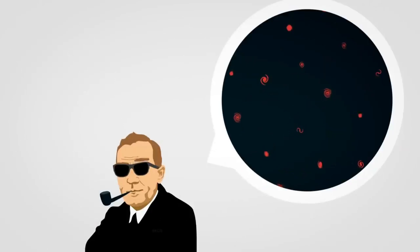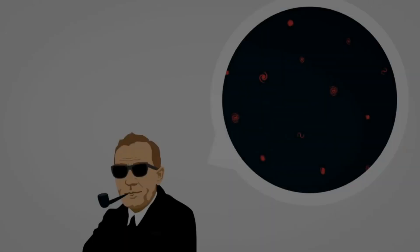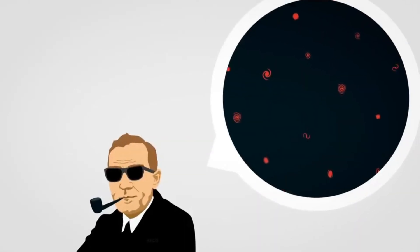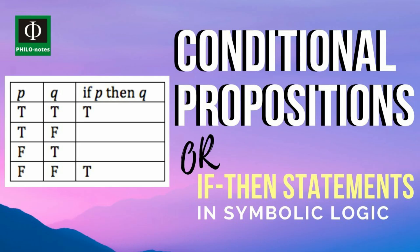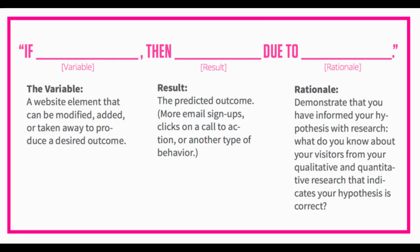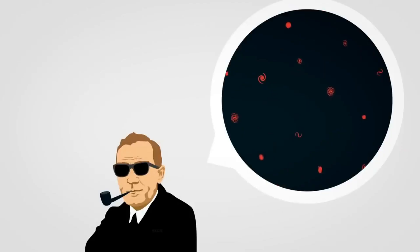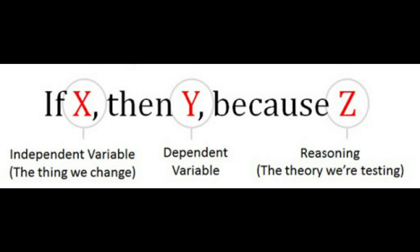Edwin Hubble discovered that galaxies are moving apart from one another in a way that fits previous predictions. This is the first if-then-because — a conditional proposition or hypothesis. Hubble discovered that galaxies were moving apart from each other. This man was on Earth with a telescope at best, and this is based on lights in the sky, not direct observations. There are a lot of assumptions going on here.